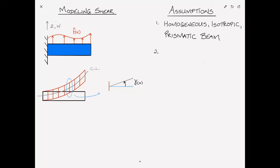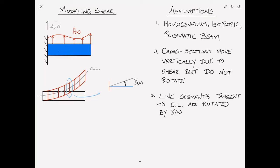So initially we'll assume that actually we haven't applied assumption 1, and everything we say is in fact valid for non-homogeneous, or anisotropic, or non-prismatic beams, or all of the above. The second assumption is that the cross sections move vertically due to shear, but they do not rotate. And we've already discussed that. The third assumption is that line segments tangent to the center line are rotated by the shear angle gamma. Where gamma, as we said, is a function of x equals gamma xz. It's the shear strain of the x-face in the z-direction, or equivalently, it's the strain of the z-face in the x-direction.